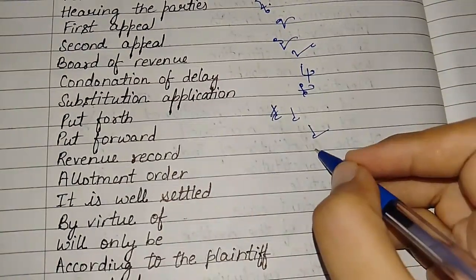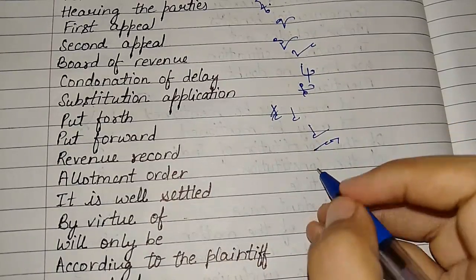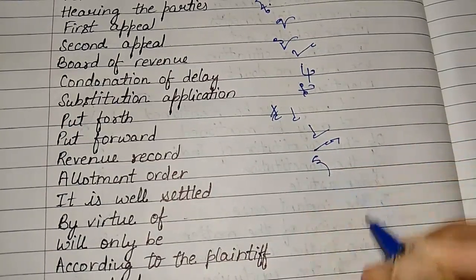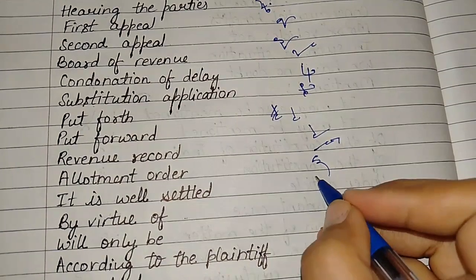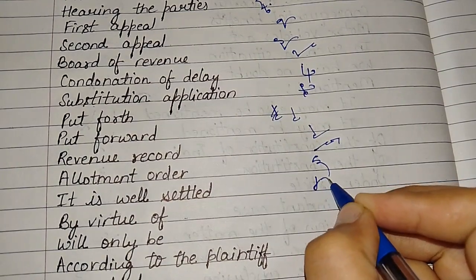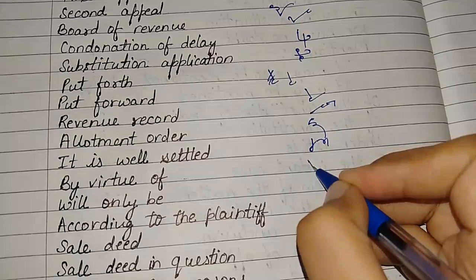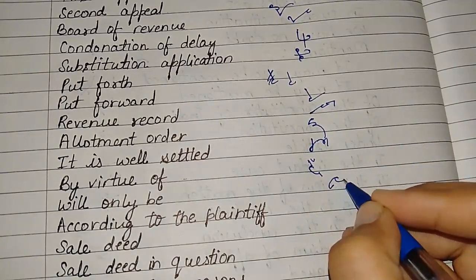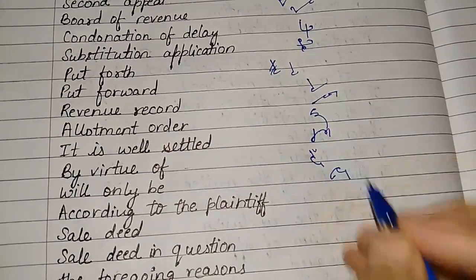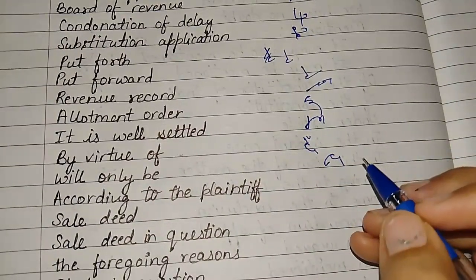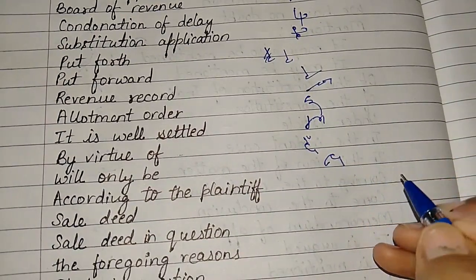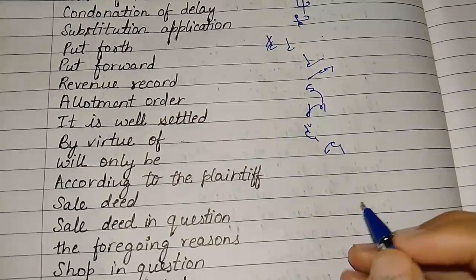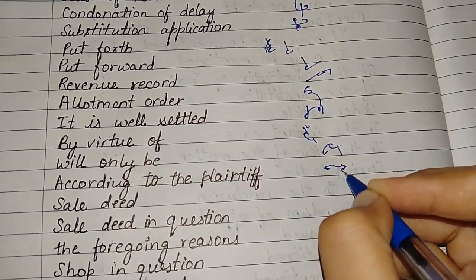Revenue record, allotment order, it is well settled, by virtue of, will only be. You can avoid the I that I wrote. According to the plaintiff.